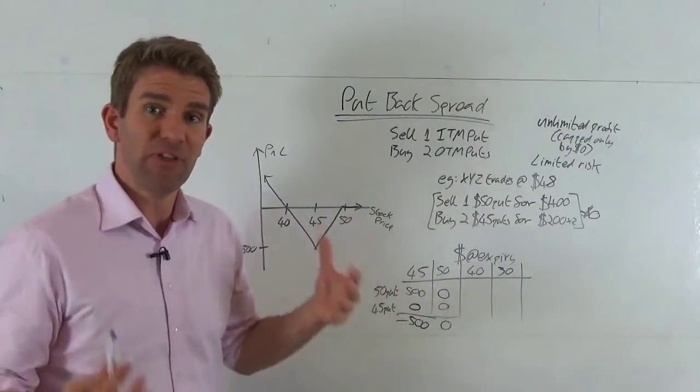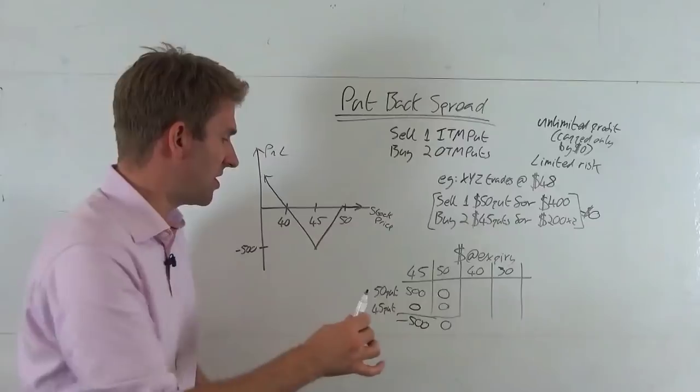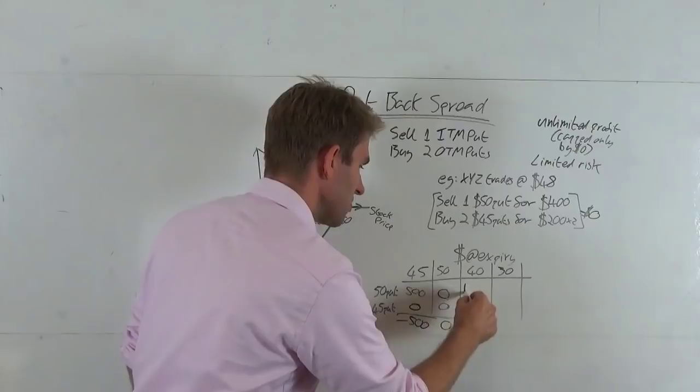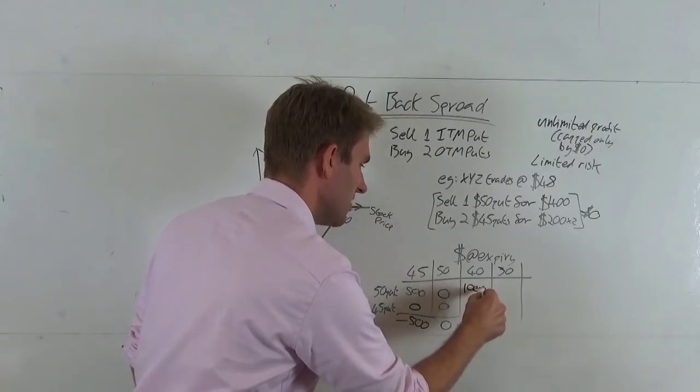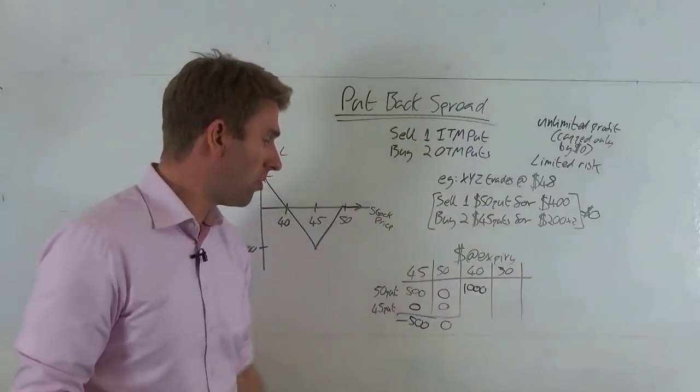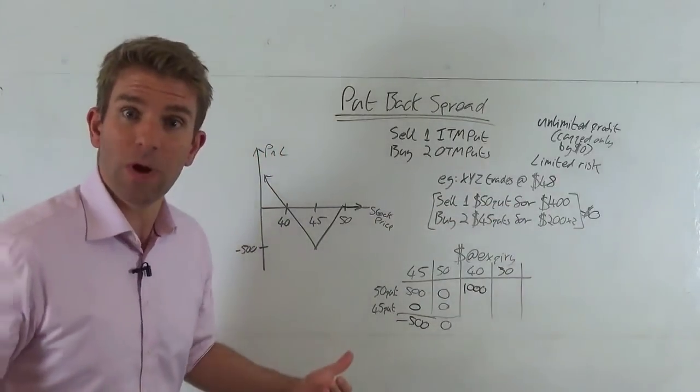What about the 40? Well, the same thing happens because of the way you position this. The $50 put has got some value of course it has - it's got $10 worth of value times by 100 - $1,000 worth of value. The $45 puts that we've bought, have they got any value? Well they do as well - two of those, they're worth $500 times the two.